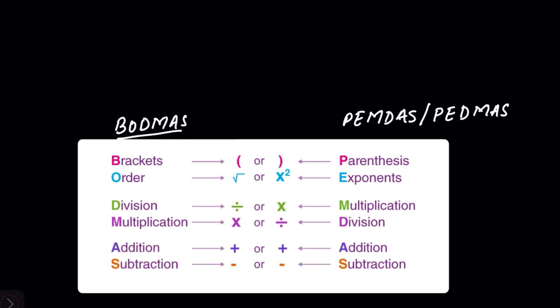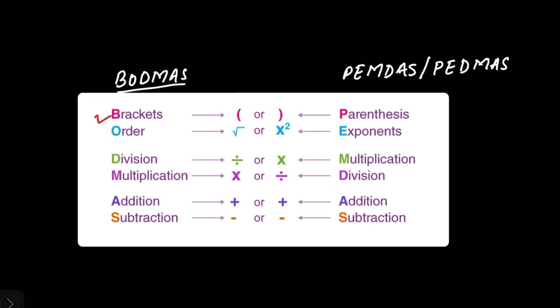In BODMAS, we follow this order: bracket, so you first solve the operations that are inside the bracket, then order such as roots, then division, multiplication, then addition, and lastly subtraction. In PEMDAS or PEDMAS, there are the same rules.